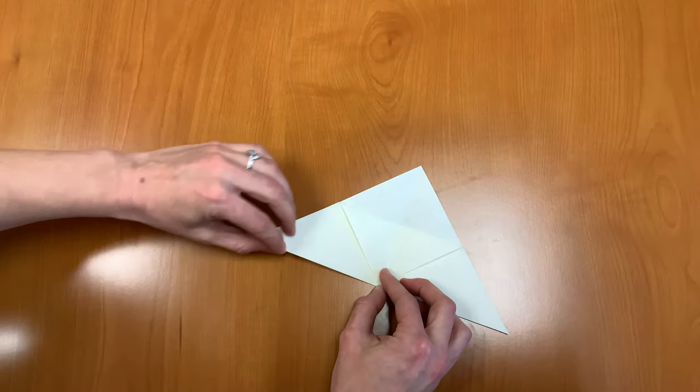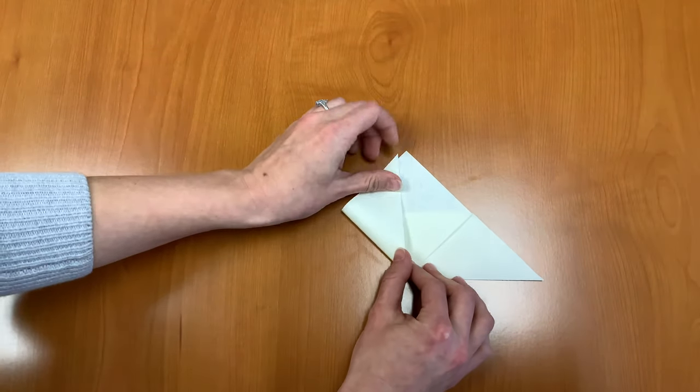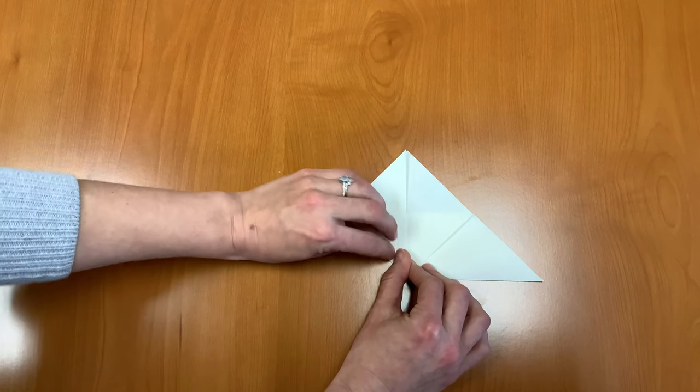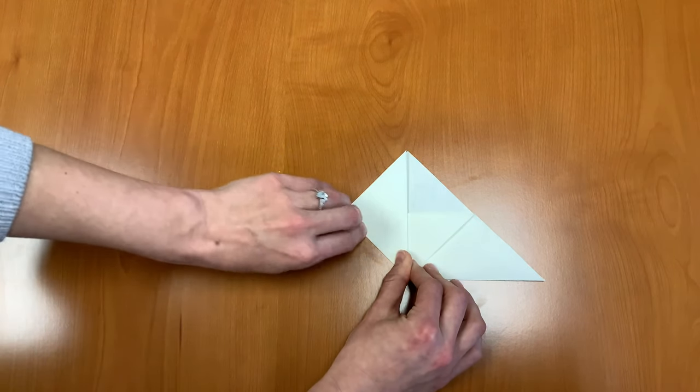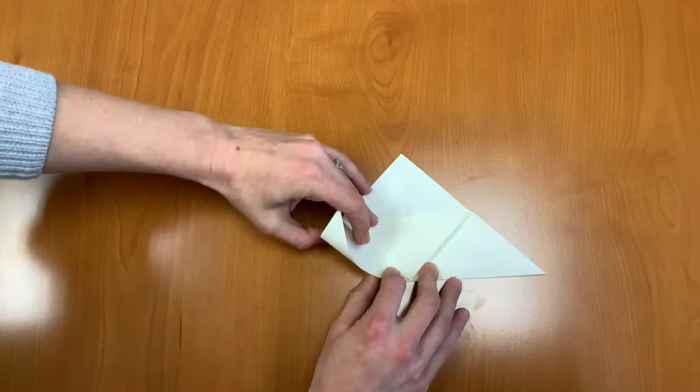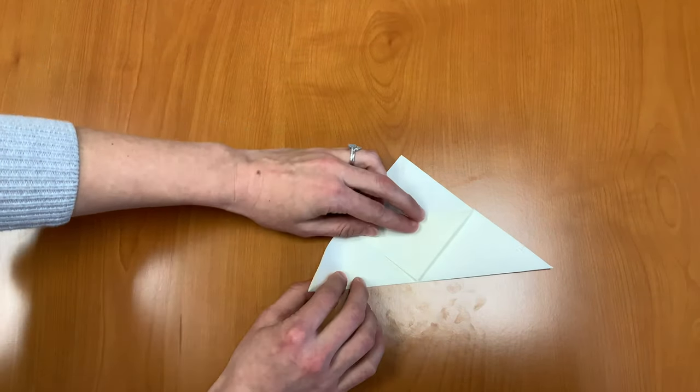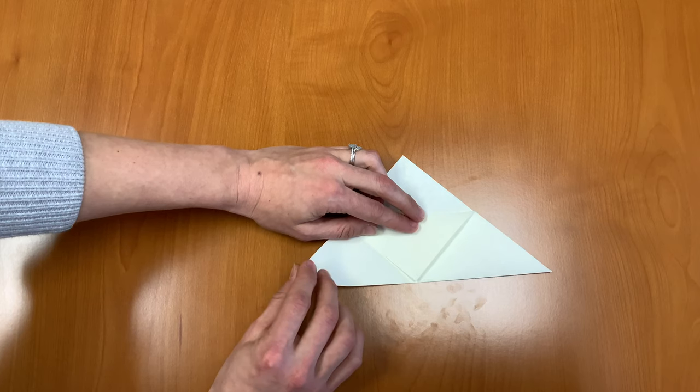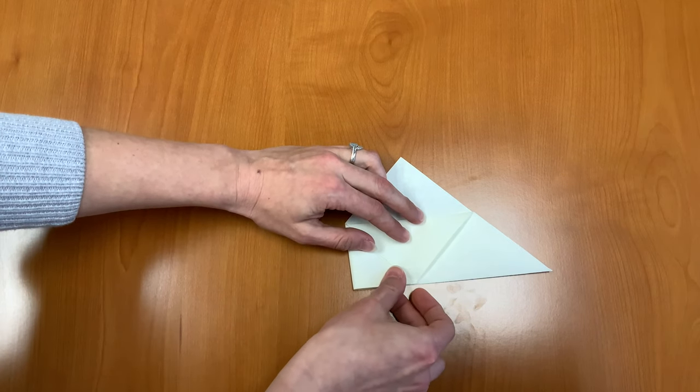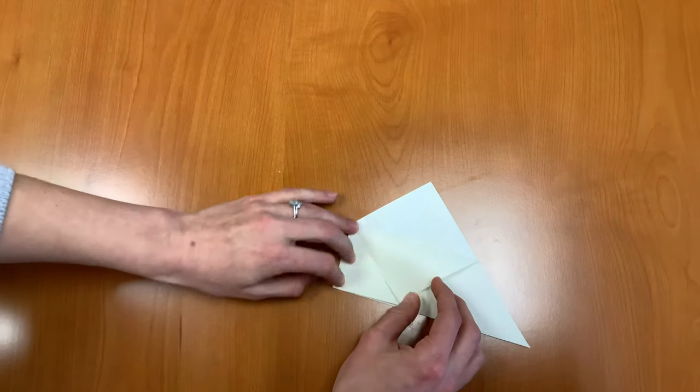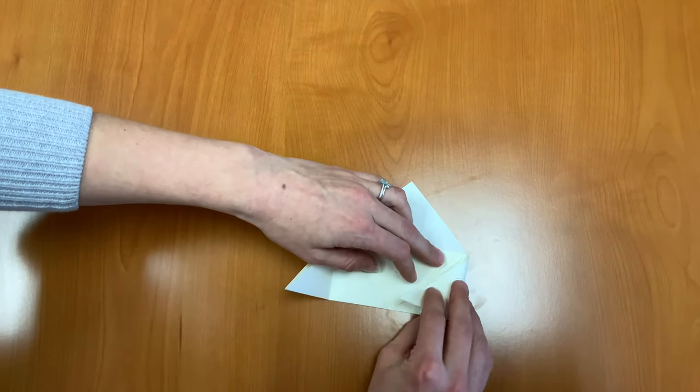Next, we're going to take the left corner and fold it up to the top point. Oh no, I'm sorry guys, we're actually going to do it differently. We're going to take this corner and fold it to the center, this center point, and unfold. And same thing with this one.